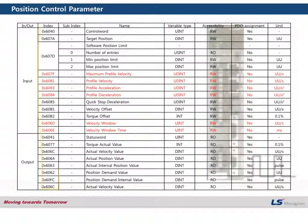These are all the parameters for position mode, but the red-marked parameters are for PP mode only. Although there are many parameters I could not explain in this limited time, if you need more detailed information on the functions, you can check the manual. Please refer to the L7NH manual. Thank you.